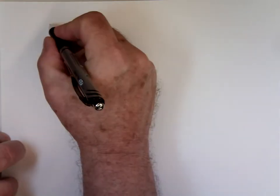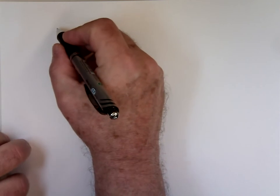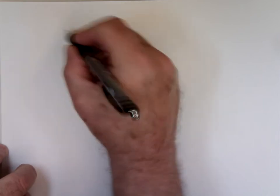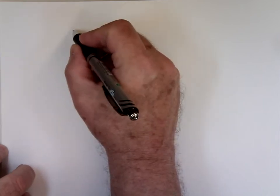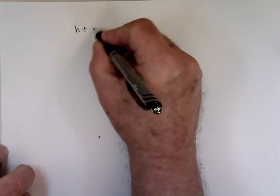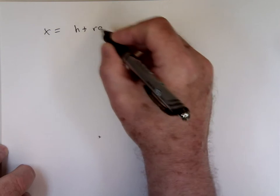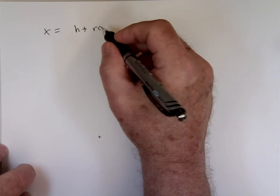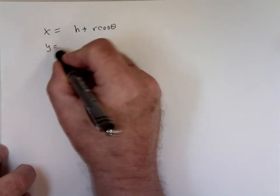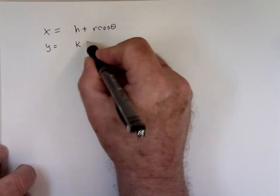Any questions on homework? David: So I had a question on problem 9 on homework 10.2, which was eliminate the parameter theta and obtain the standard form of the rectangular equation. It says X equals H plus R cosine theta, and then Y is K plus R sine theta.